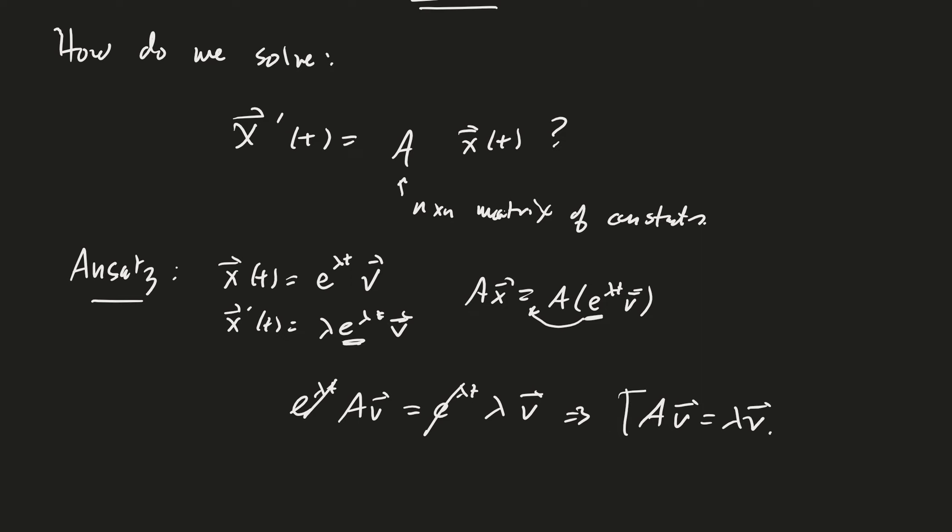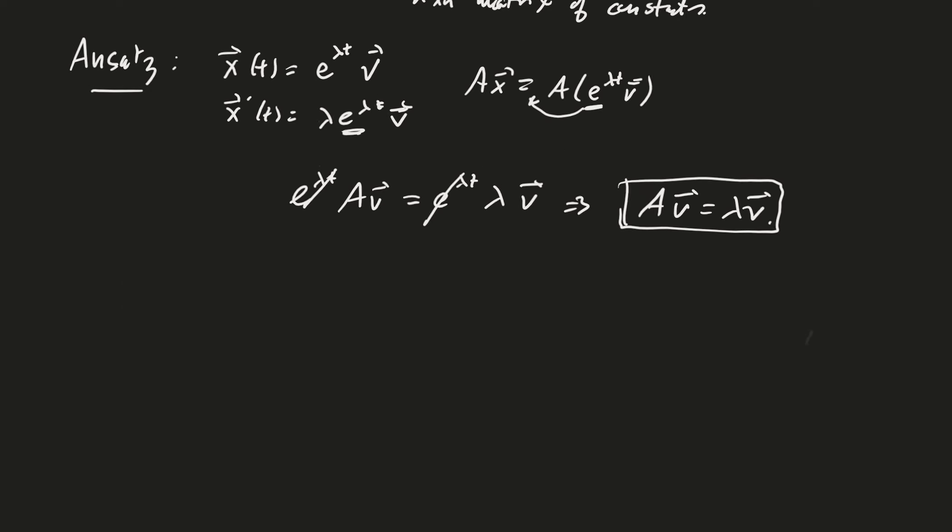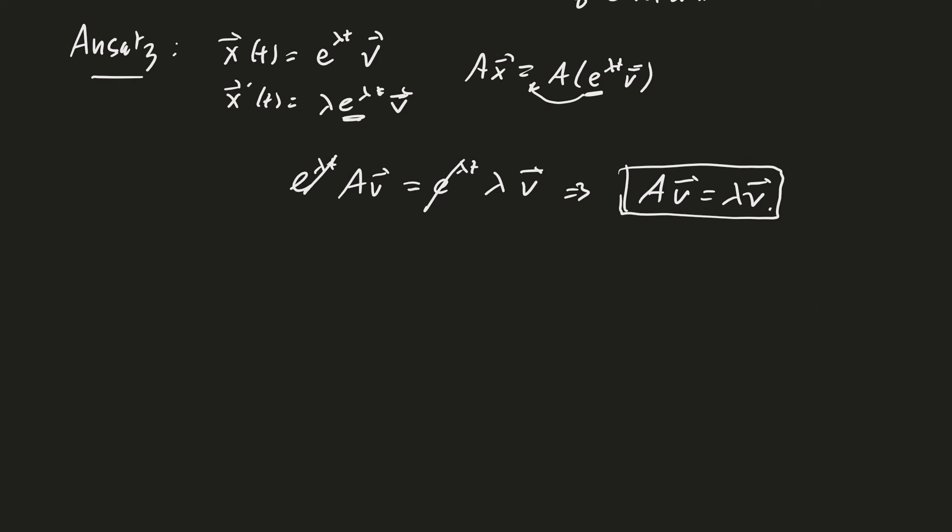So therefore, we get that av must be equal to lambda v. And, of course, this equation is probably jumping out at the page at you, because that is the defining characteristic of an eigenvalue and an eigenvector. And we should say specifically that v is not equal to zero, the zero vector. Lambda could be zero, but v is not zero.